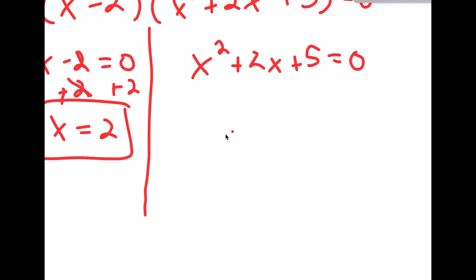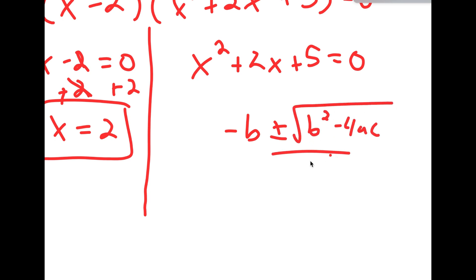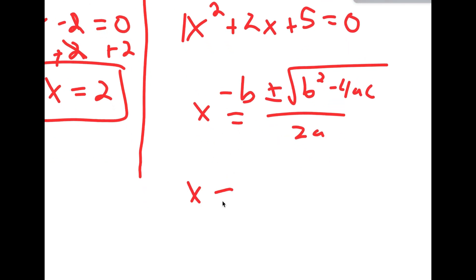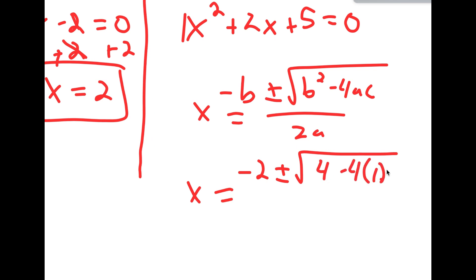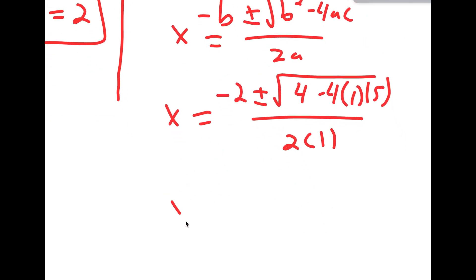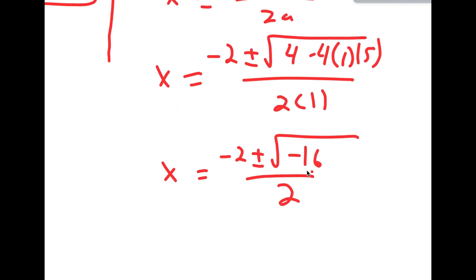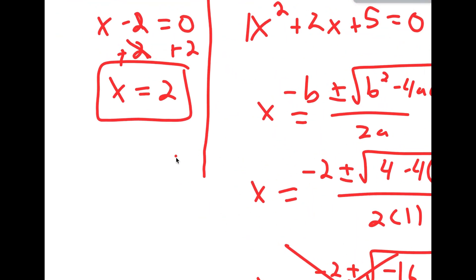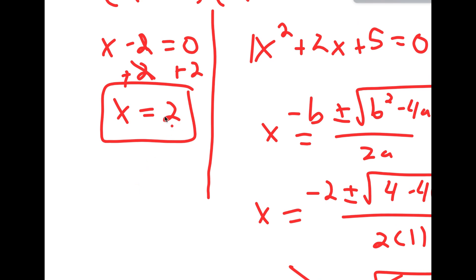For x squared plus 2x plus 5 equals 0, I can use the quadratic formula. I get negative 2 plus or minus the square root of b squared, which is 4, minus 4 times a times c, all over 2a. This equals negative 2 plus or minus the square root of 4 minus 20, which is negative 16, over 2. You can't take the square root of a negative number, so there's no real solution here. Meaning my only solution to this equation is x equals 2.